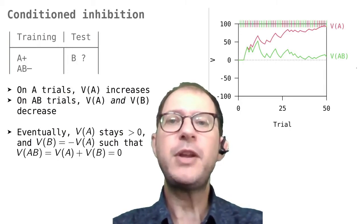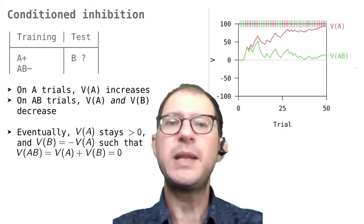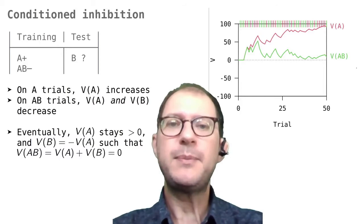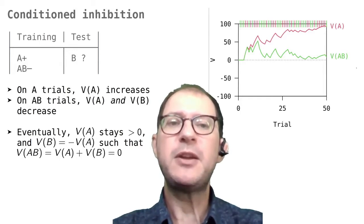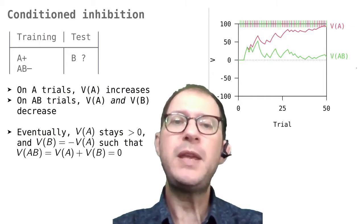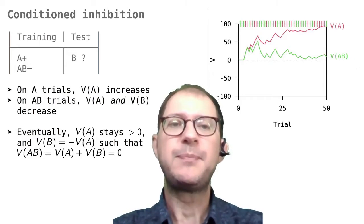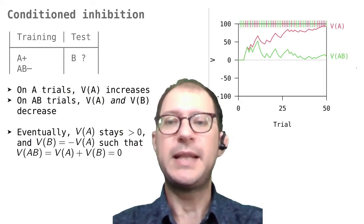Now I have added green and red bars to show the exact sequence of experiences used by the computer. Red means a rewarded presentation of A, and green an unrewarded presentation of A and B. On the reinforced trials, V(A) goes up, while on the unreinforced trials, both V(A) and V(B) go down. Because the two types of trials are mixed, we see that the lines go up and down.